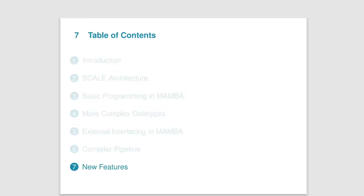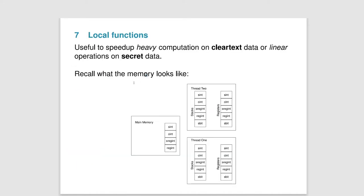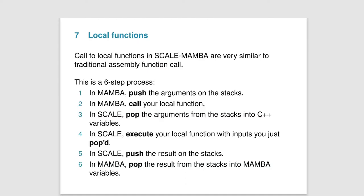In this last section we are going to see some of the new features that Scale/Mamba has to offer. First we are going to look at local functions with a small example, then garbled circuits, and finally how to do a secure distributed setup. Let's see a small recap on memory — we've seen this diagram before, but so far we've only really used registers. In this section we are actually going to use the stacks, because this is how we are going to pass arguments to our local functions and also our garbled circuits.